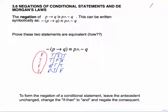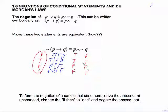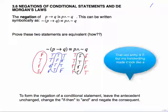That's my resultant column for the left side. For the right side, P is T, T, F, F. Not Q goes false, true, false, true. The only time a conjunction — an AND statement — is true is if both statements are true, so only the second row is true and the rest are false. These two columns are the same, so these two statements are equivalent.